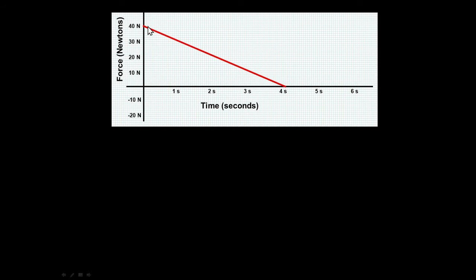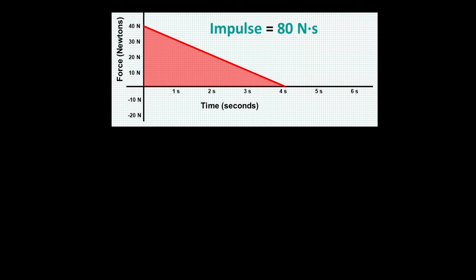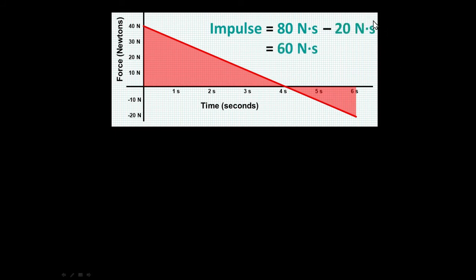Let's say we started pushing with 40 newtons and over the course of 4 seconds tapered off to zero newtons. The area of that triangle is one-half times 40 times 4, giving an impulse of 80 newton-seconds. Then at 4 seconds we reversed direction, applying a negative force back to the left — 20 newtons for 2 seconds as a triangle gives negative 20 newton-seconds. So the total impulse over that 6 seconds was 60 newton-seconds.